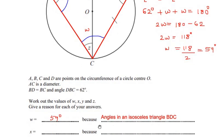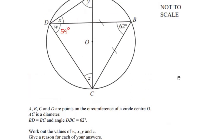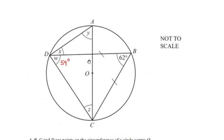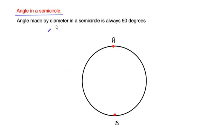Next, let us find angle X. We consider diameter AC, which divides the circle into two equal halves. The diameter AC makes an angle in the semicircle at point D. We use the circle theorem which states that the angle made by a diameter in a semicircle is always 90 degrees.